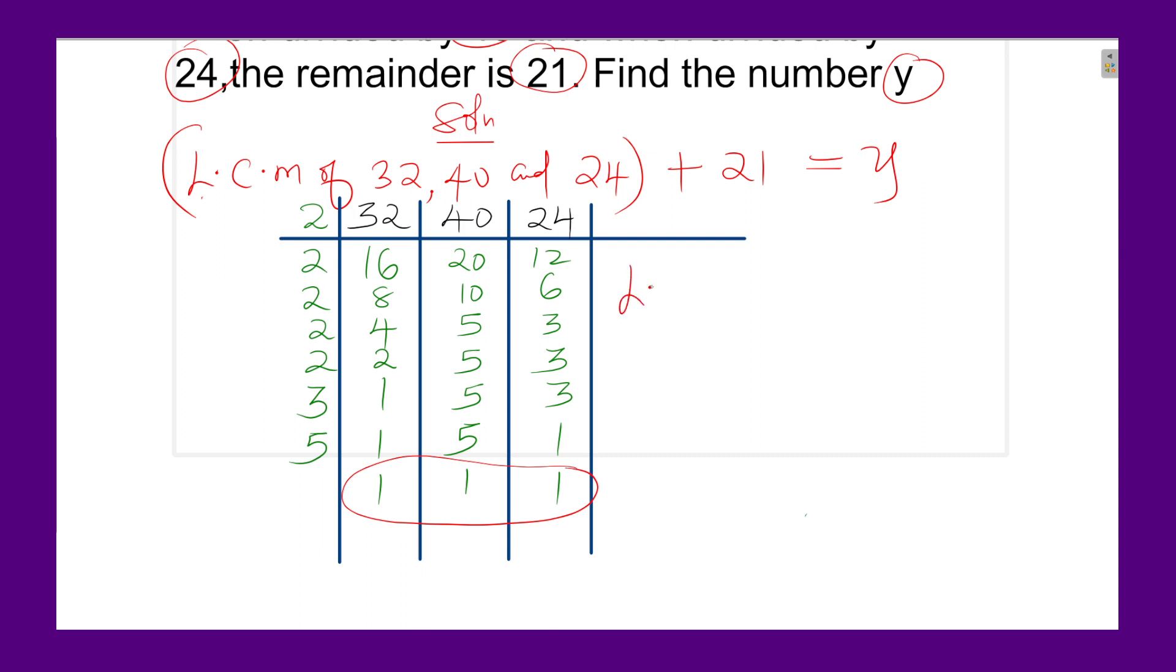Now therefore, the LCM will be given by 2 raised to the power 5. As you can see here, 2 raised to the power 5, multiply by 3, multiply by 5. And when you work out these, you will get the LCM being 480.